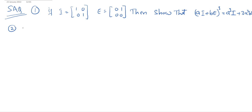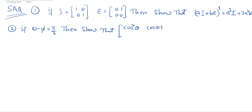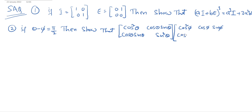Second question: if θ − φ = π/2, then show that the matrix product [cos²θ, cosθ sinθ; sinθ cosθ, sin²θ] × [cos²φ, cosφ sinφ; sinφ cosφ, sin²φ] = 0.